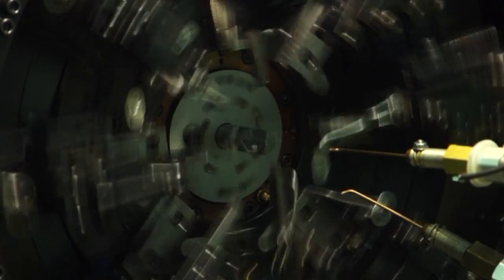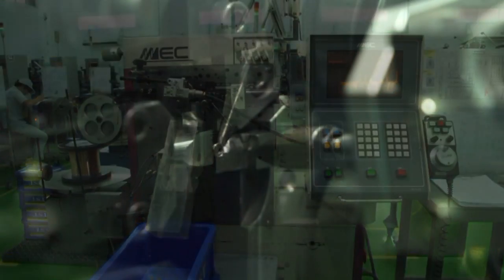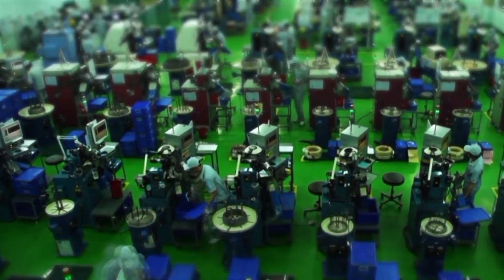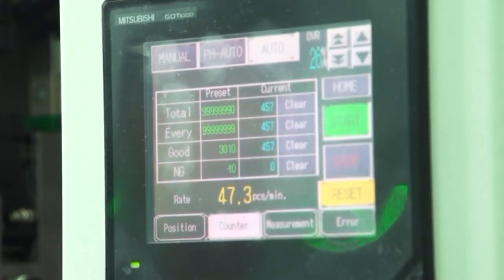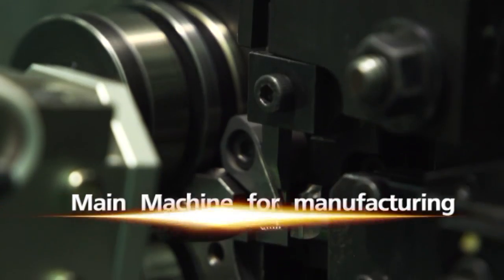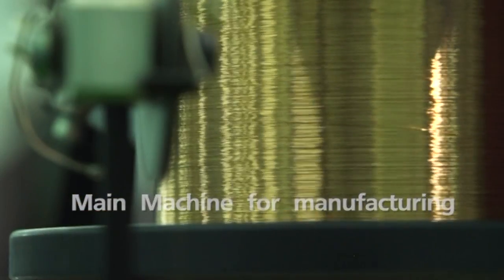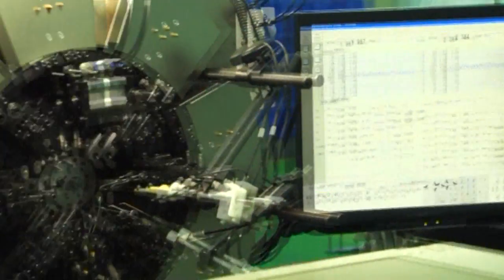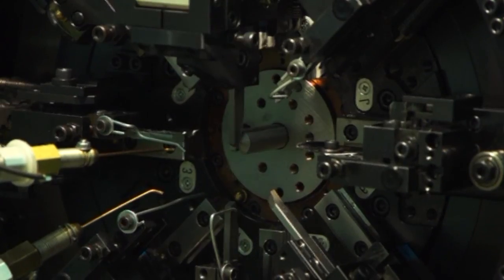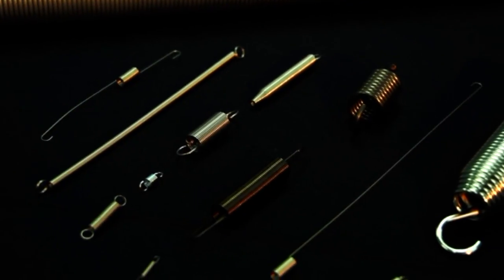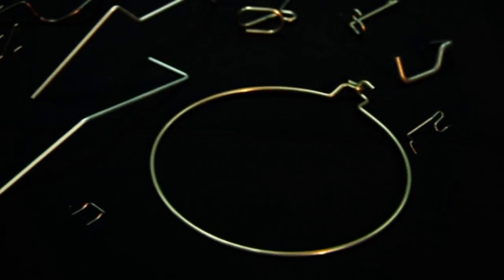Takahashi Spring Thailand Company Limited uses only the newest machines with high quality from Japan for manufacturing. Each machine is used for producing each type of spring: main machines for manufacturing compression springs, for producing torsion springs, extension springs, and wire form.